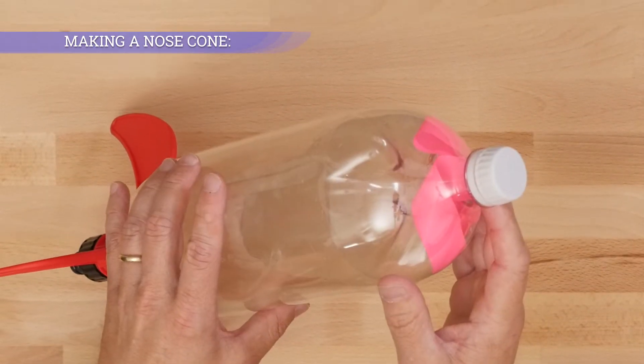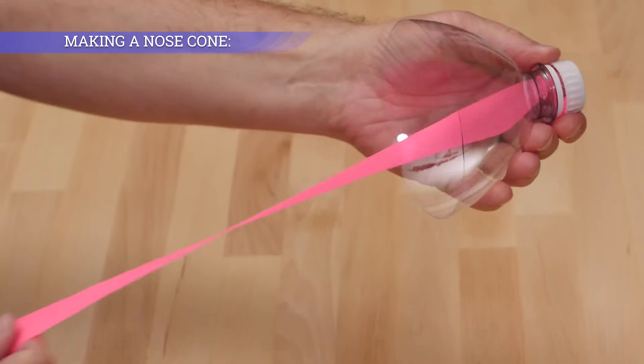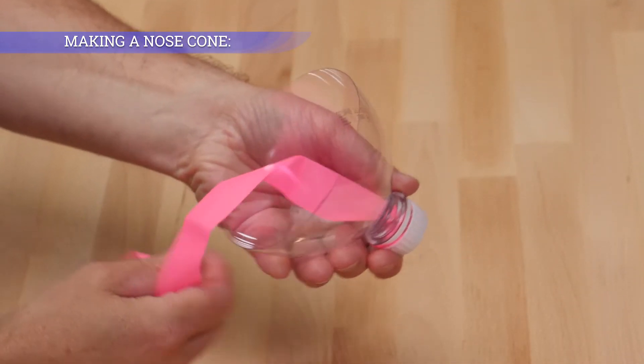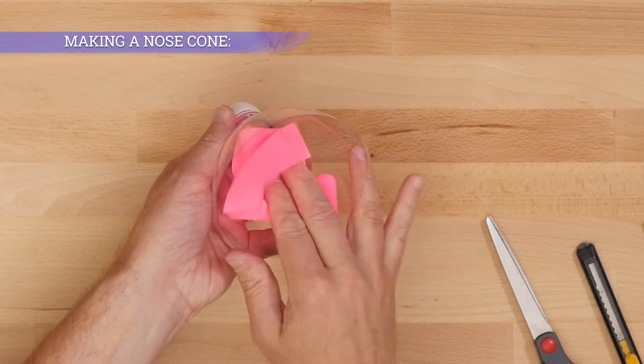The extra weight aids in falling off at apogee. The bright pink flagging tape helps to locate your nose cone once it lands on the field.